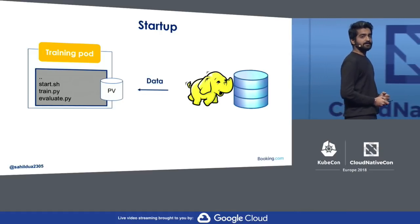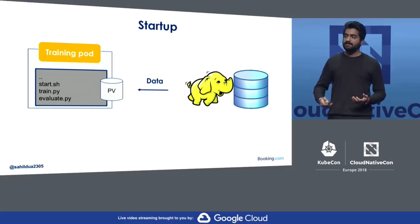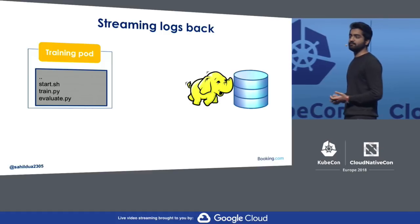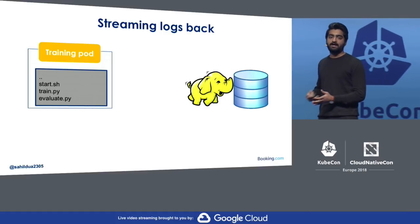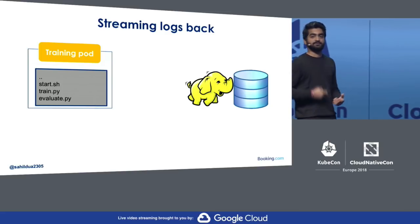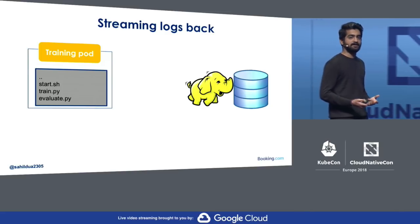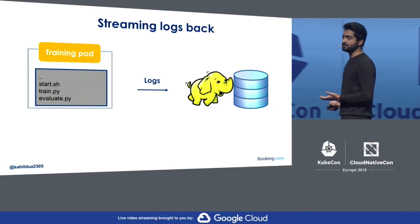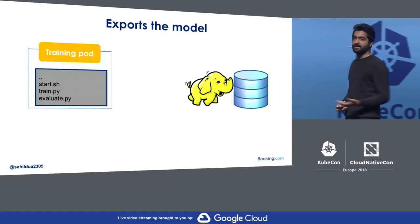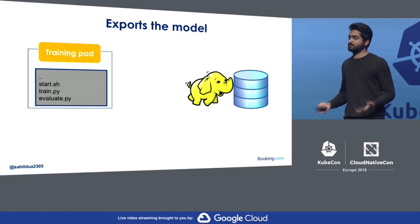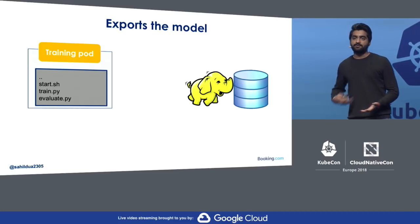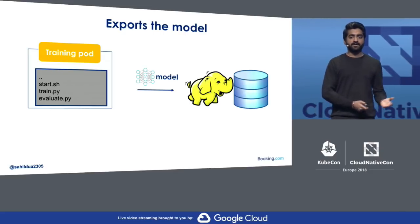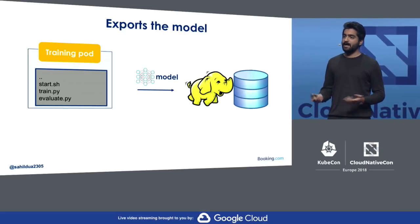Let's look at the training process from a visual point of view. We have a training pod that knows where to fetch the code — it has a training script and evaluation script. The next step is to get the data, either by streaming from Hadoop storage or downloading into a persistent volume. Once we have the data, we start running the training. While the training is running, data scientists should be able to monitor progress using TensorBoard, so we stream the logs back to Hadoop storage. Once training is done, we store the model back to Hadoop storage so we can use it later to deploy and get predictions.